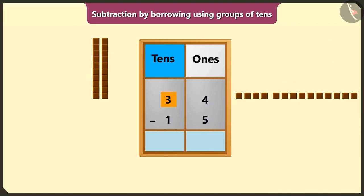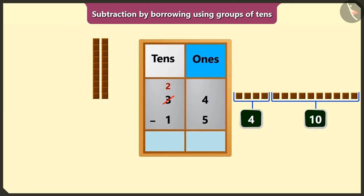So if we subtract 1 tens from 3 tens of the box of tens, then we would have 2 tens. We will write 2 at the top of the box of tens. Now we will have 1 borrowed 10 means 10 ones plus 4 ones equal to 14 ones in the box of ones.